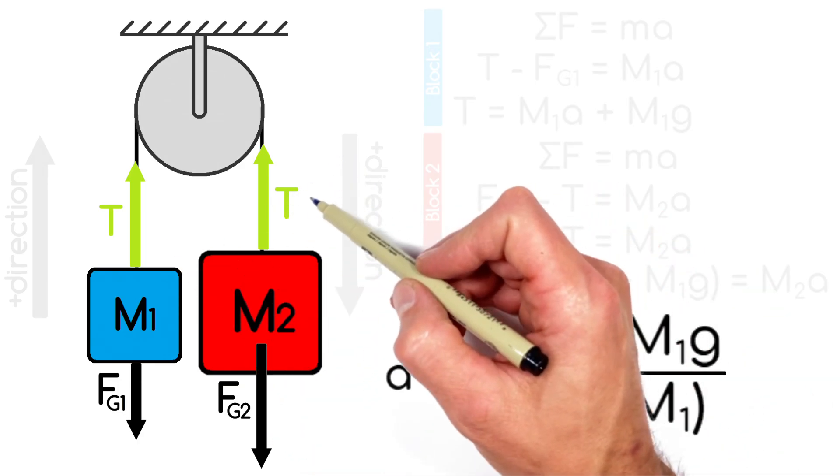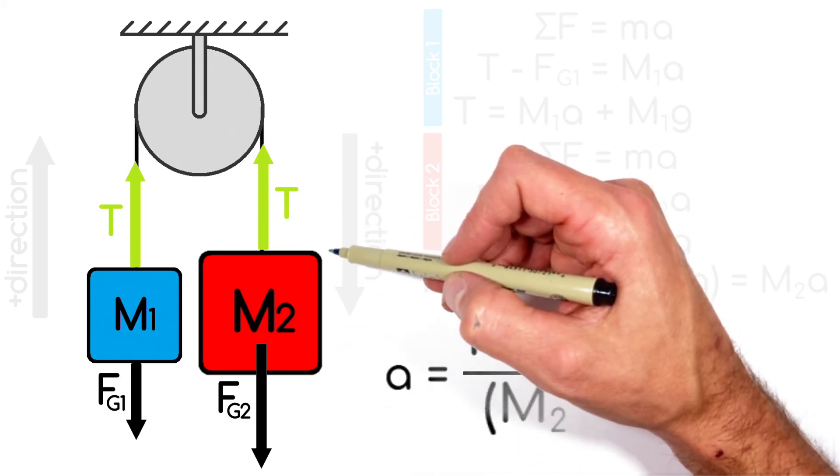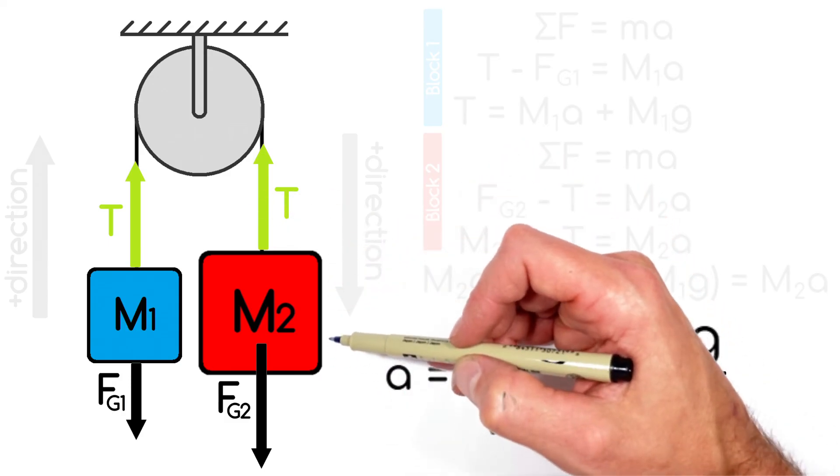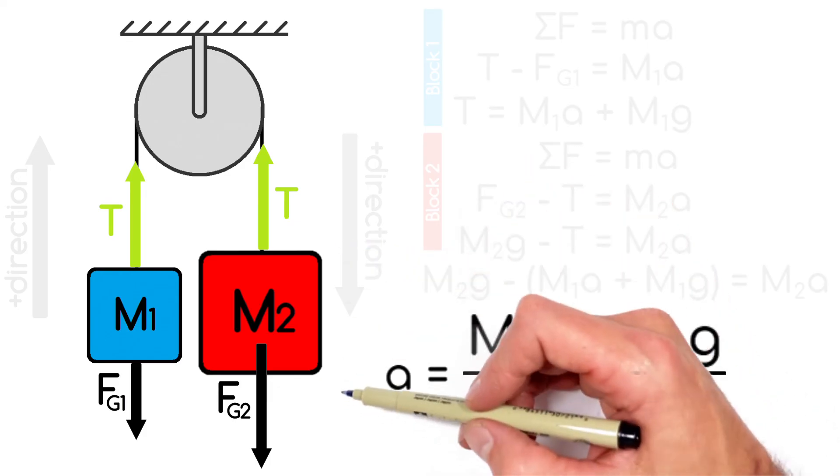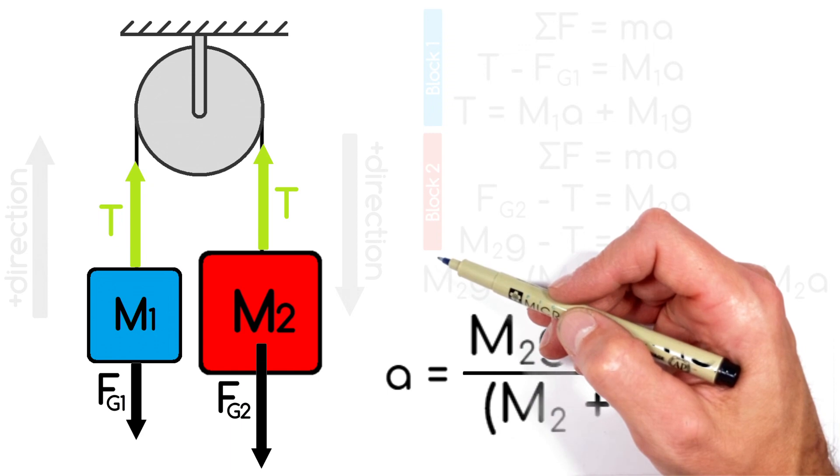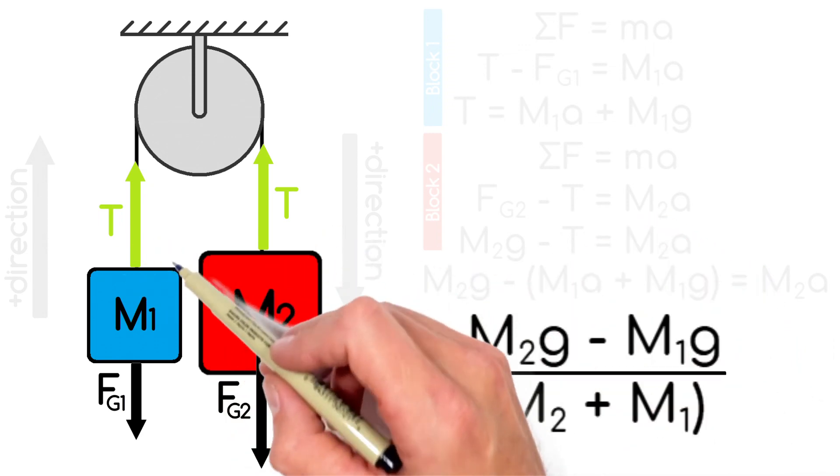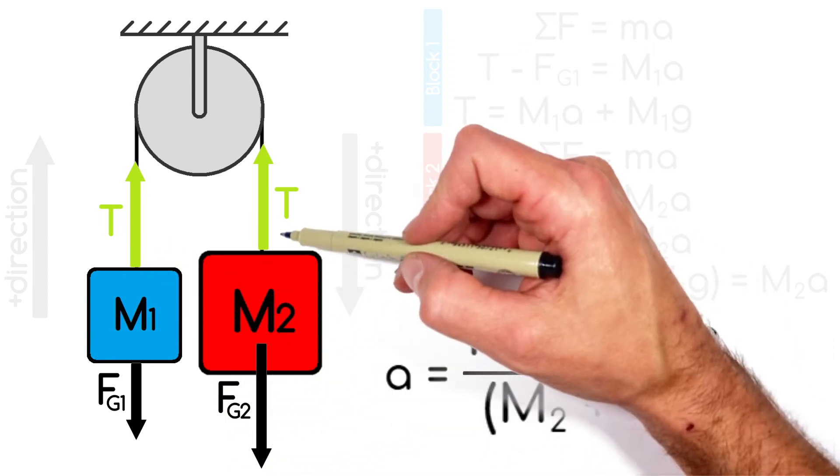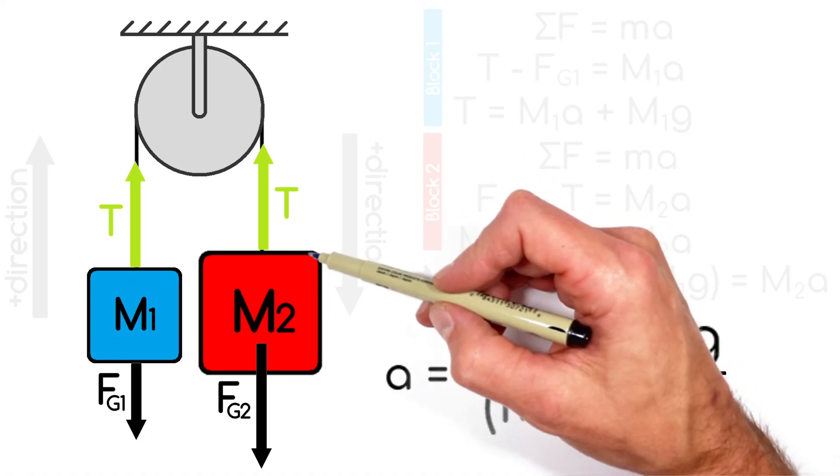Imagine there was no string here. We just cut the string and allowed the block to free fall. Well, in that case, the block would accelerate downward at g or 9.8 meters per second squared on Earth. And the smaller block, no matter how little it is, is only ever just working against the downward acceleration of this heavier block.